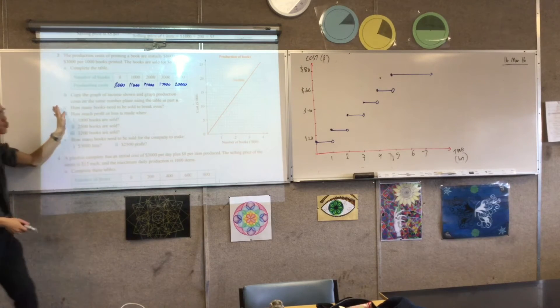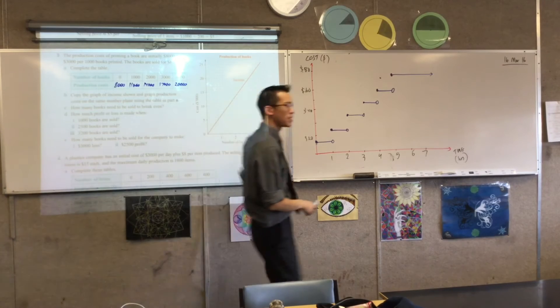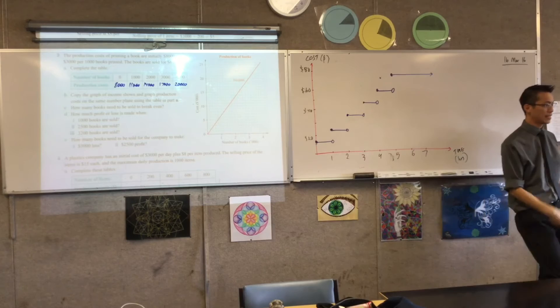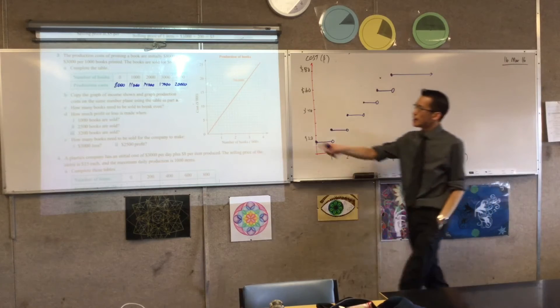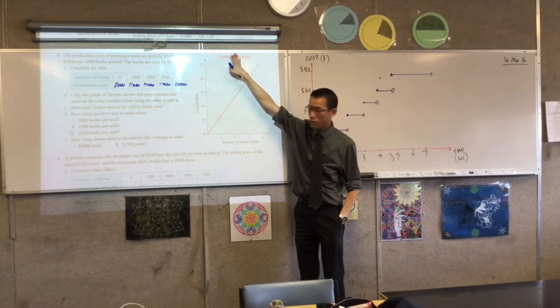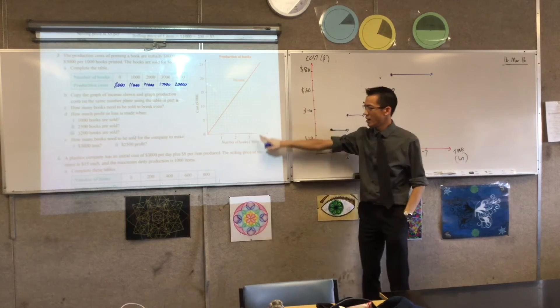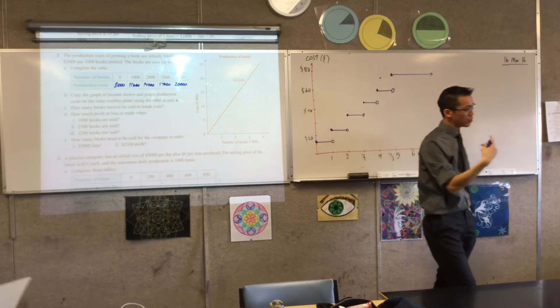Now we're going to take this and we're going to wrap it on top of this line that's already there. Now before we do that I want you to have a look at what the line means, interpret it with me. This is, for the same production of books, how much income is generated for how many books are sold.